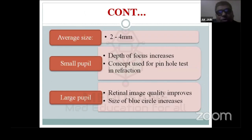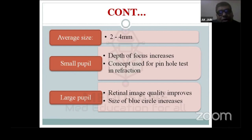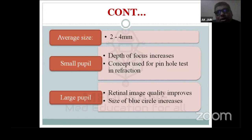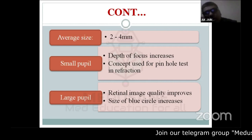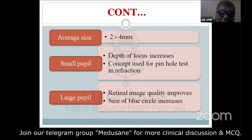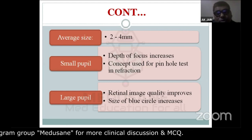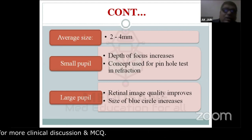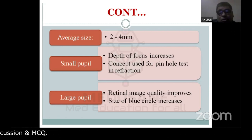If the pupil becomes less than 2 mm, the depth of focus increases. This concept is used as the pinhole test during refraction to check the accuracy of refractive power calculation. If the pupil is larger than 4 mm, the retinal image quality initially improves, but simultaneously the size of the blur circles also increases, which hampers the retinal images.